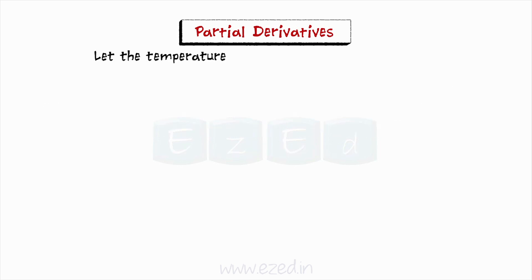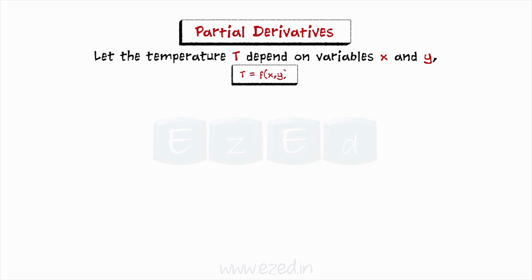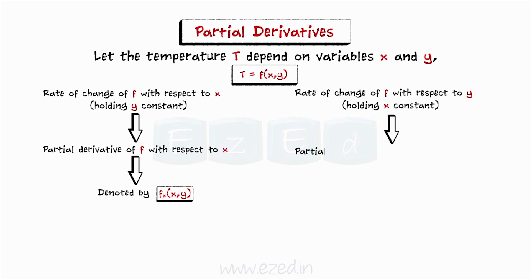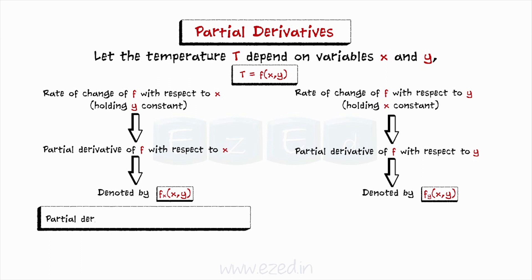Let the temperature T depend on variables x and y — that is, T equals f(x, y). The rate of change of f with respect to x, holding y constant, is called the partial derivative of f with respect to x and is denoted by f sub x of (x, y). We define it as del f by del x, which equals the limit as h tends to 0 of [f(x+h, y) minus f(x, y)] over h.